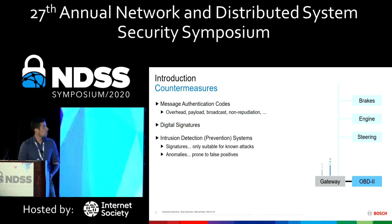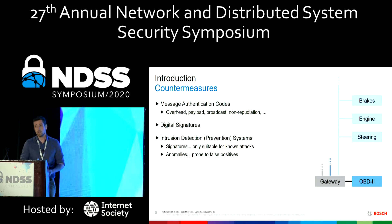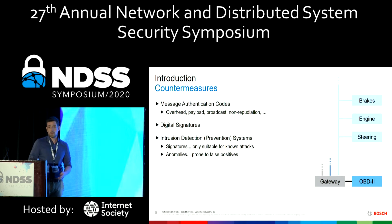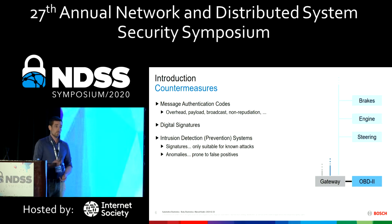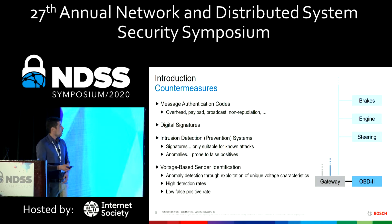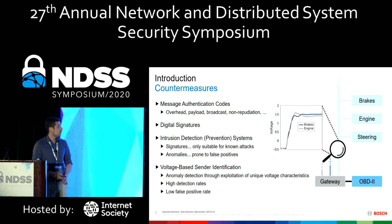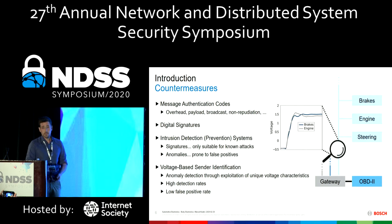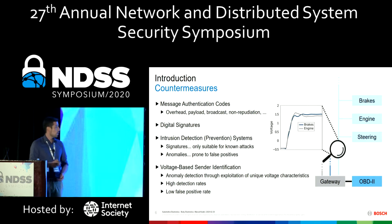Another idea are intrusion detection or prevention systems. Signature-based approaches are only suitable for known attacks, and one attack that fits for vehicle A does not automatically fit for vehicle B — so that's a problem. Anomaly-based approaches specify the behavior of your communication, but these are very prone to false positives. With high traffic in a car, even small false positive rates result in a high number of wrong alarms. Voltage-based sender identification exploits the voltage characteristics of analog signals to identify the sender, and these approaches have high detection rates and really low false positive rates, but high hardware demands.